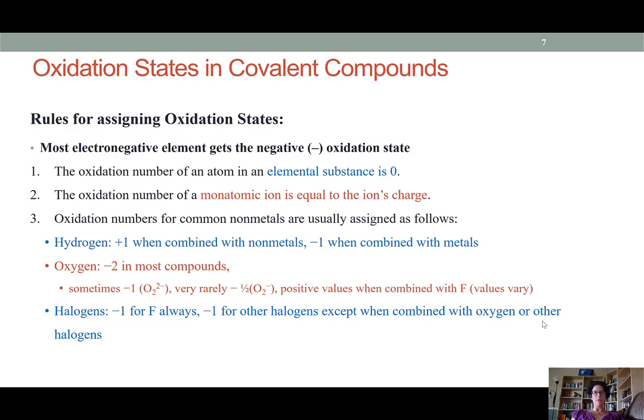That being said, fluorine is the most electronegative element. So the following oxidation state rules apply whenever looking at covalent compounds. If we're dealing with a pure elemental substance, the oxidation number of the atoms within that substance are 0. For example, if we are dealing with elemental oxygen, each oxygen atom within that molecule would be assigned an oxidation number of 0.